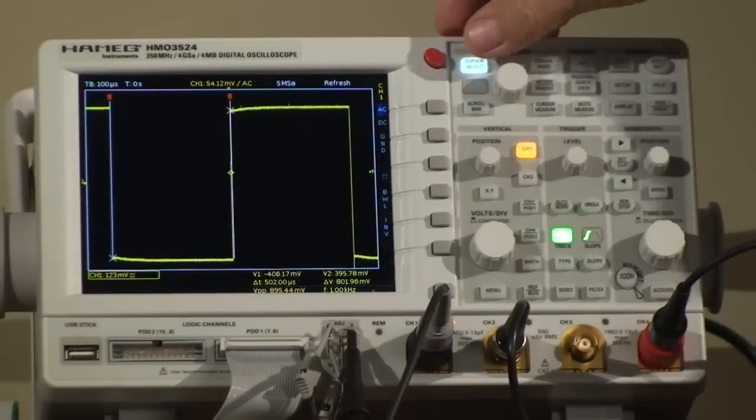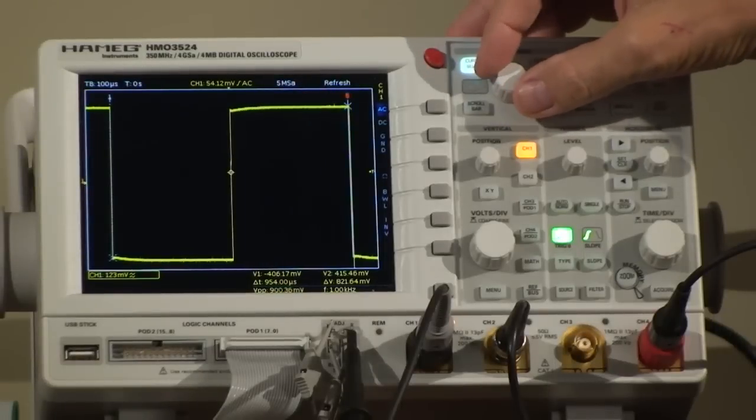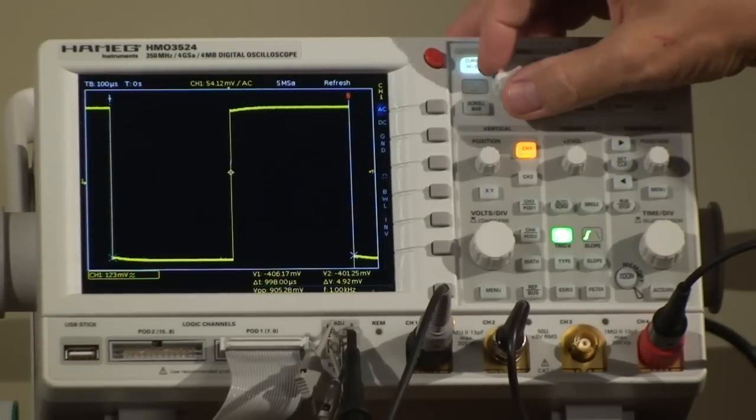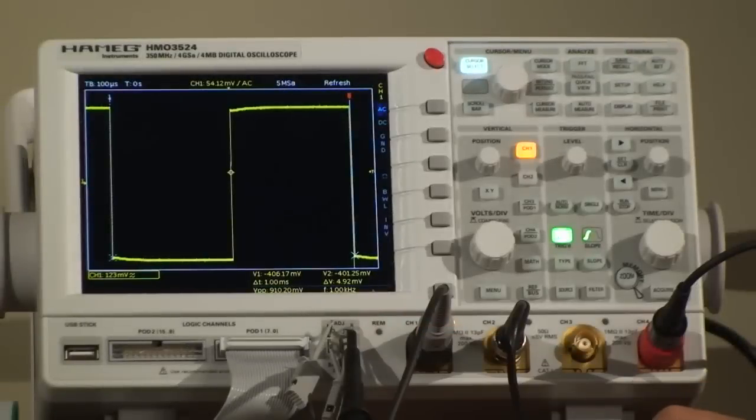I now have both cursors, and now I have the right cursor, so now I measure the full period of the signal. That should be right around 1000 microseconds or 1 millisecond, which is the 1 kilohertz that we have here. It's our test signal.